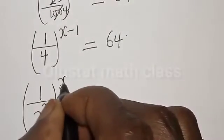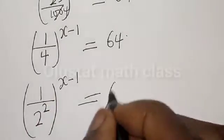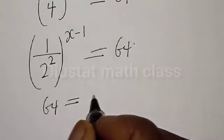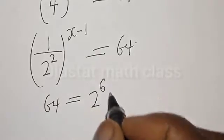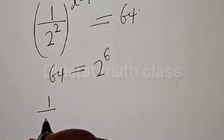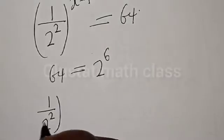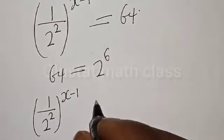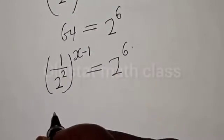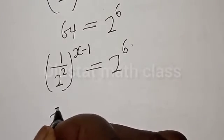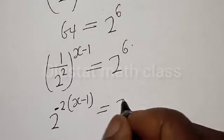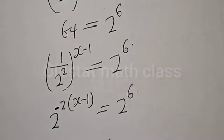So we have 1 divided by 2 squared, raised to power s minus 1, is equal to 64. And 64 is equal to 2 raised to power 6. So we have 1 divided by 2 raised to power 2, raised to power s minus 1, is equal to 2 raised to power 6. We can write this as 2 raised to power minus 2 times (s minus 1), is equal to 2 raised to power 6.